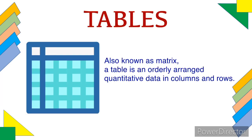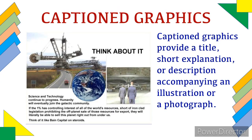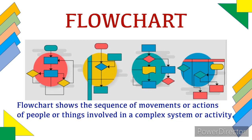Next, we have tables. A table, also known as a matrix, refers to orderly arranged quantitative data in columns and rows. Then we have maps. A map refers to a collection of data showing the spatial arrangement or distribution of something over an area. We also have captioned graphics, which provide a title, short explanation, or description accompanying an illustration or photograph. Finally, we have flowcharts. A flowchart shows the sequence of movements or actions of people or things involved in a complex system or activity.